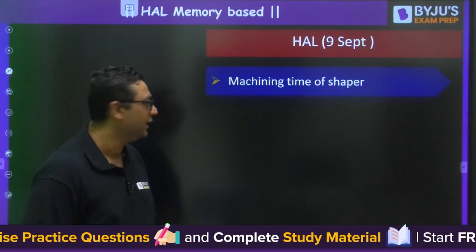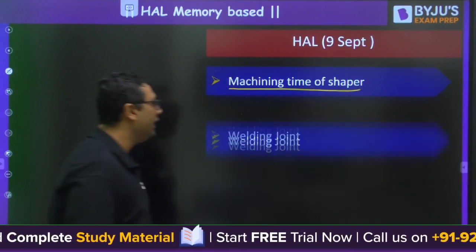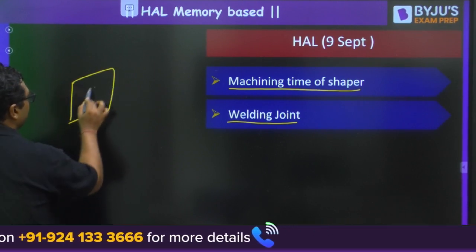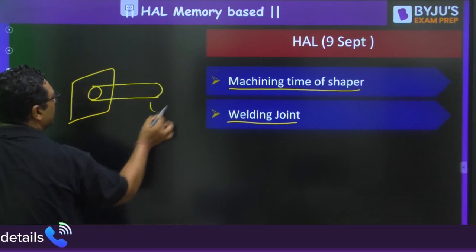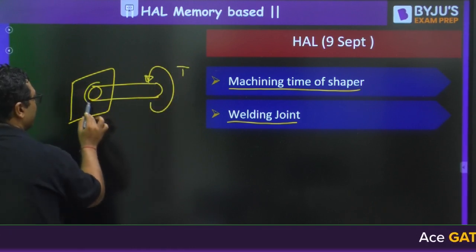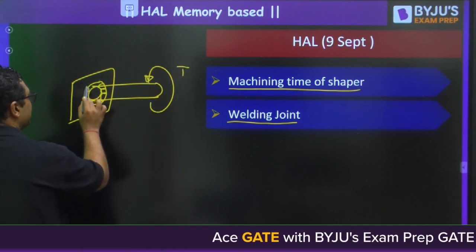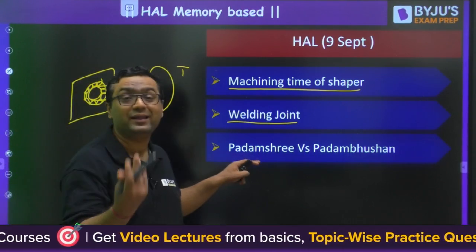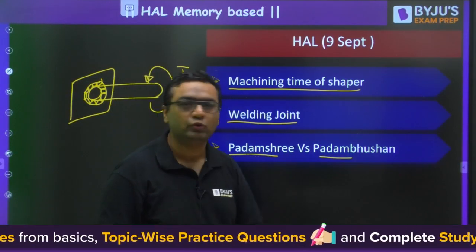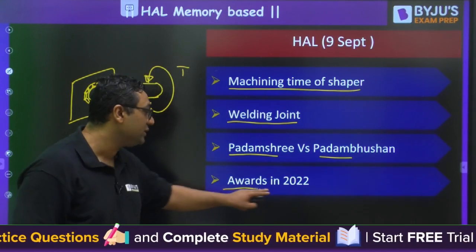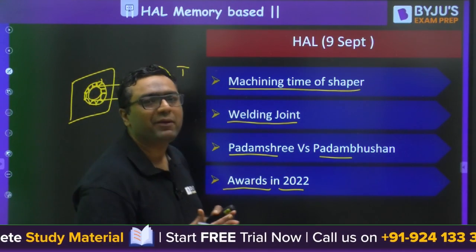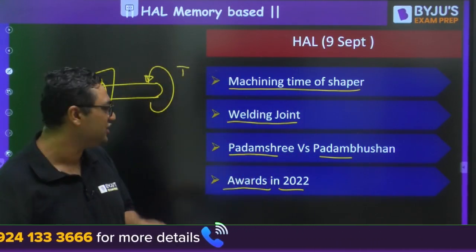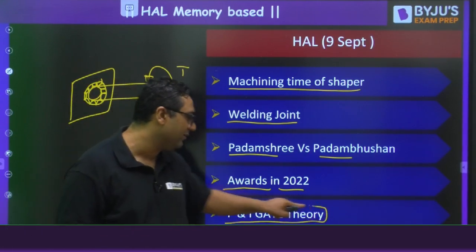They asked about machining time for a shaper, and also about machine design in welding joints — specifically, welded joints subjected to pure torsion, asking about the welding area. In the GS section, questions were asked about Padma Shri versus Padma Bhushan awards, including who received awards in 2022. A lot of GS questions came from this area. Theory questions of P&I were also present, as this paper was for production and industrial branch students.